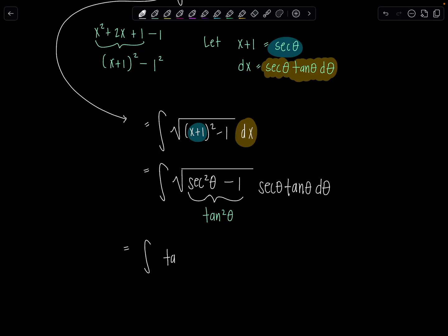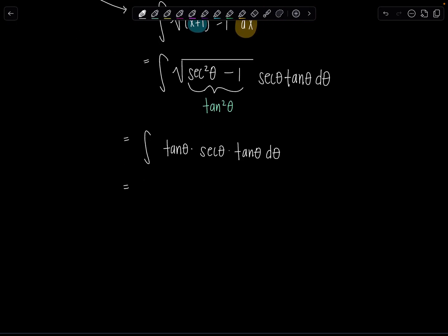So we'll have tan theta times secant theta, tan theta, d theta. Perfect. So I can clean this up a wee bit. I can write it as secant theta times tangent squared theta d theta.